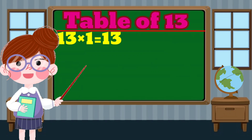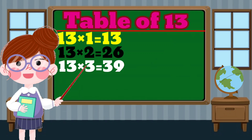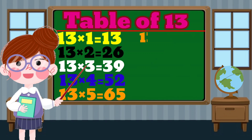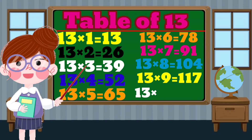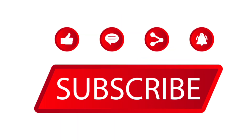13 x 1 equals 13. 13 x 2 equals 26. 13 x 3 equals 39. 13 x 4 equals 52. 13 x 5 equals 65. 13 x 6 equals 78. 13 x 7 equals 91. 13 x 8 equals 104. 13 x 9 equals 117. 13 x 10 equals 130.